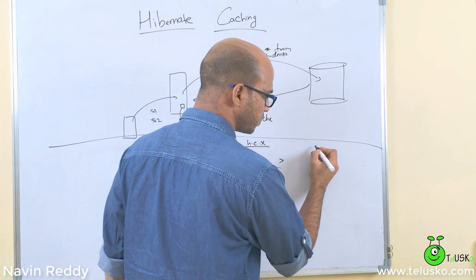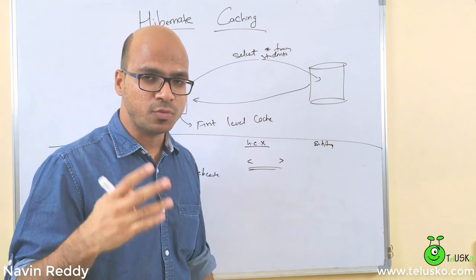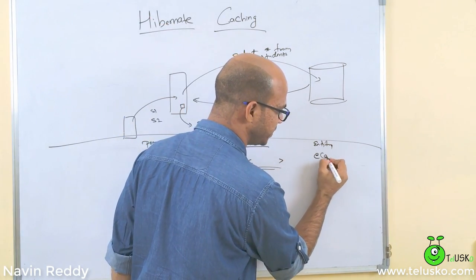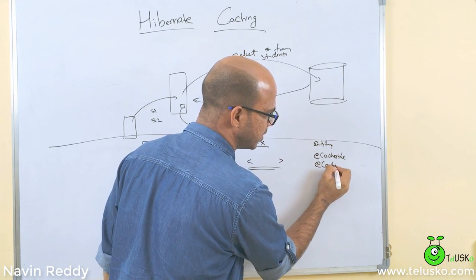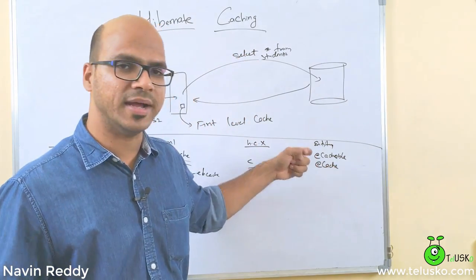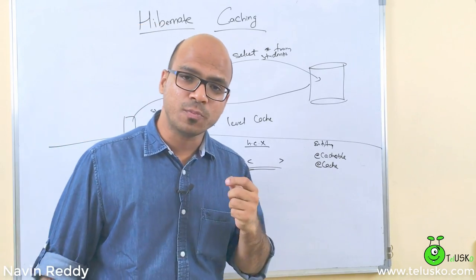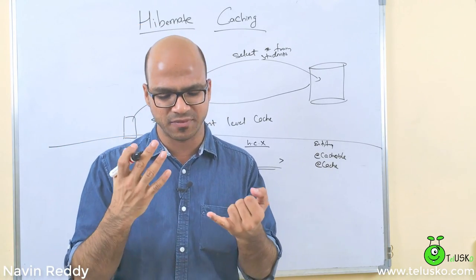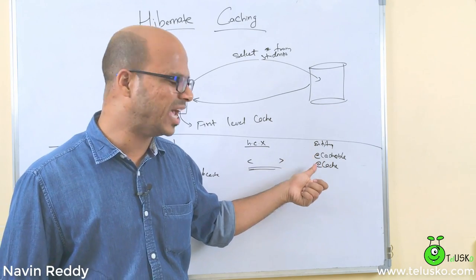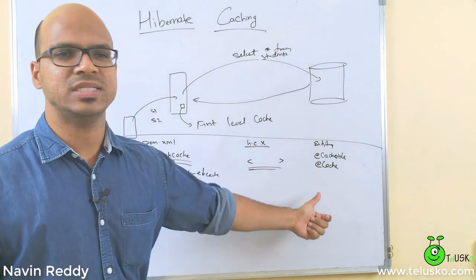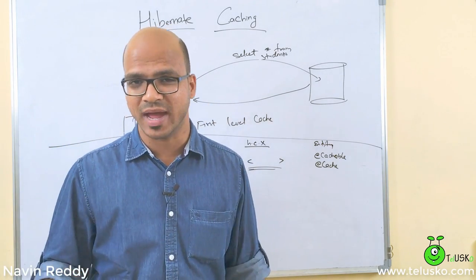The next configuration needed is on your entity class, because by default not every entity is cacheable. You have to provide two annotations: the first is @Cacheable, which marks the entity as eligible for caching, and the second is @Cache, where you specify the caching strategy. There are different strategies available such as read-only. Once you configure these things, you are using second level cache.